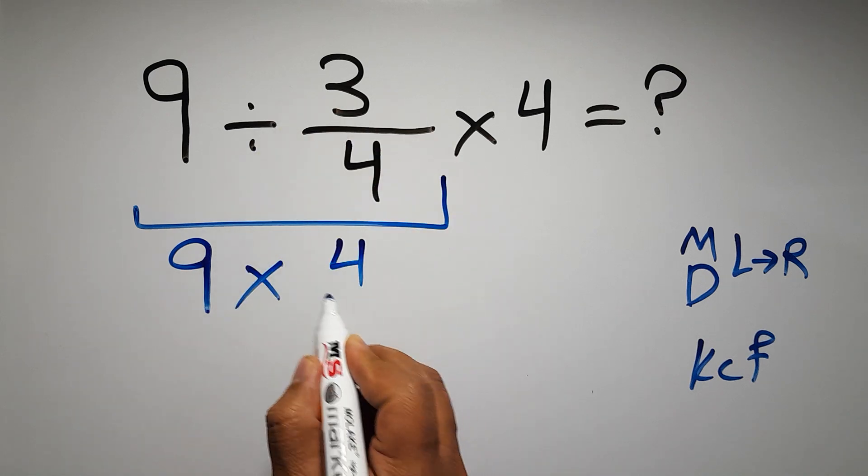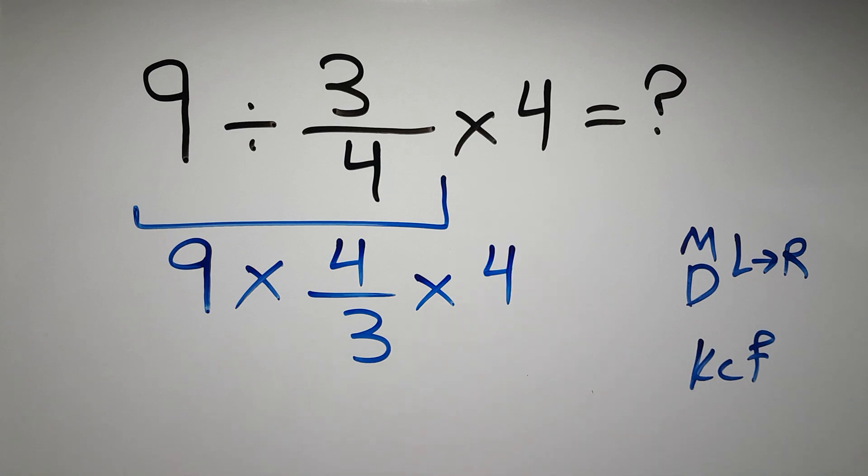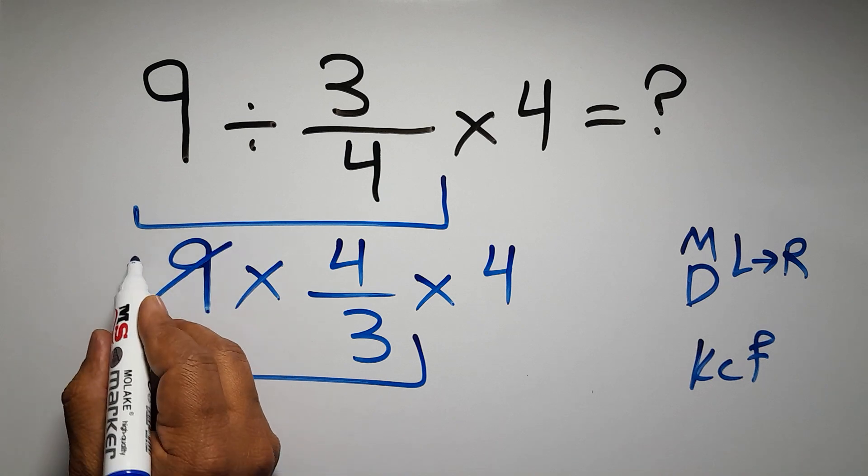Okay, 9 times 4 over 3. 9 divided by 3 gives us 3, and 3 divided by 3 gives us 1. So we have 3 times 4 which equals 12.